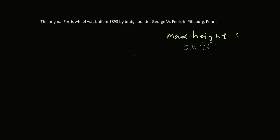And the wheel had a diameter of 250 feet. So let's actually draw a circle representing the Ferris wheel. Here's the center of the Ferris wheel, and the maximum height right here is 264 feet. So here's the height of the Ferris wheel, which is 250 feet. So the diameter is 250 feet.